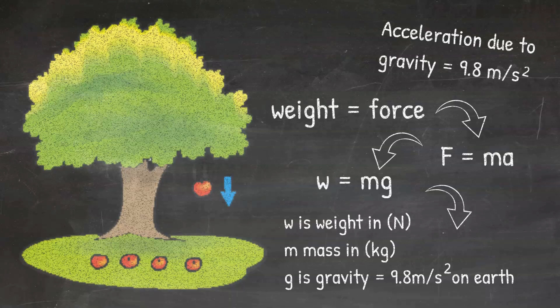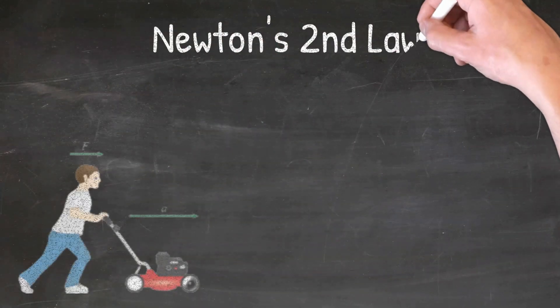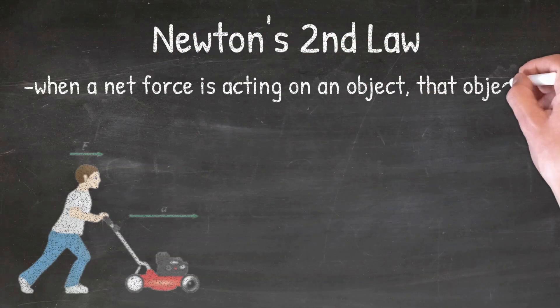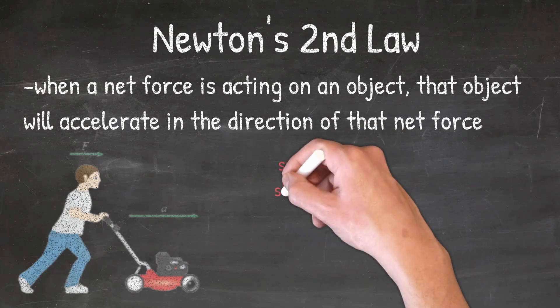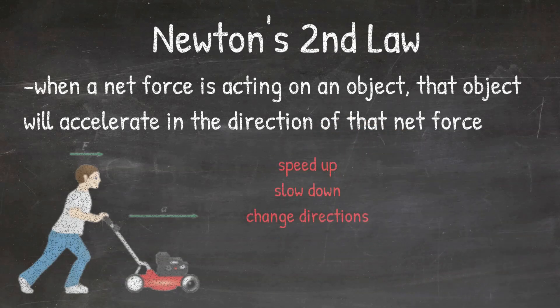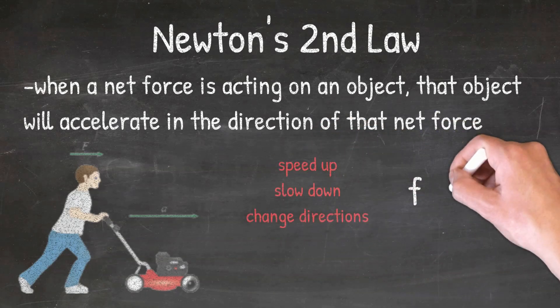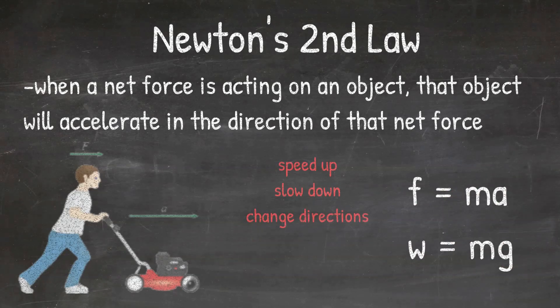Notice that the unit for weight is still Newtons, as weight is just the force of gravity. To summarize, Newton's second law tells us that if a net force is applied to an object, that object is going to accelerate — meaning it will speed up, slow down, or change directions. We can solve for force using the formula F equals MA, and we can solve for weight using the formula W equals MG.